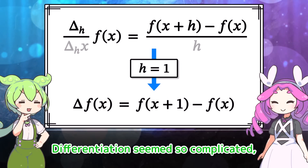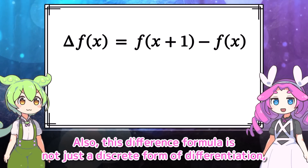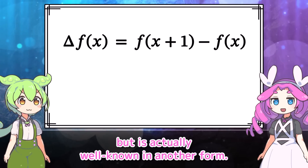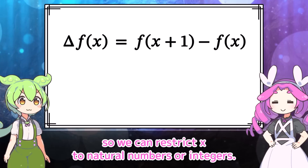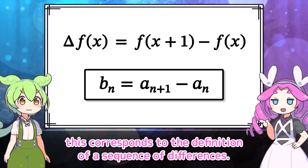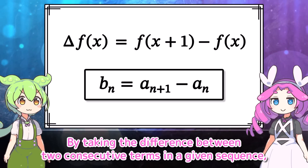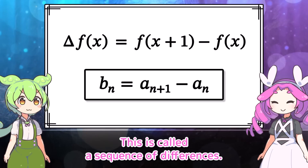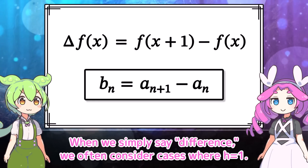You're right! Differentiation seems so complicated, but discretizing it makes it this simple. Also, this difference formula is not just a discrete form of differentiation, but is actually well known in another form. Here the change interval is 1, so we can restrict x to natural numbers or integers. Specifically, if we restrict x to natural numbers, this corresponds to the definition of a sequence of differences — by taking the difference between two consecutive terms in a given sequence, a new sequence is generated. This is called a sequence of differences. This is what I learned in class.